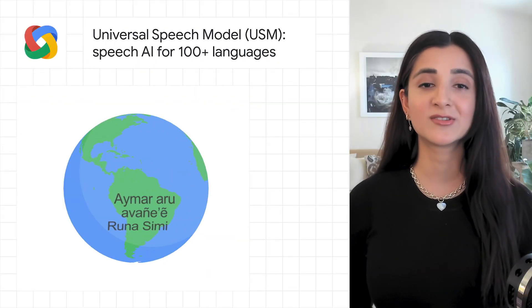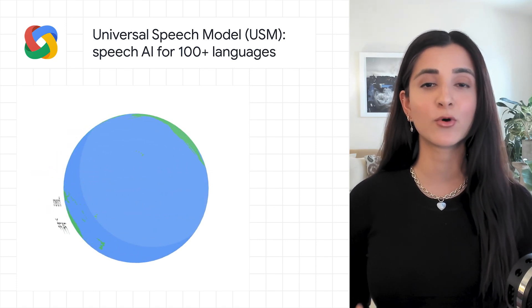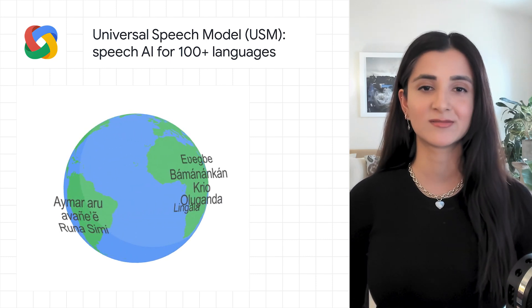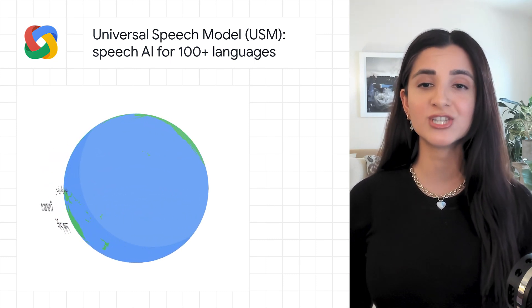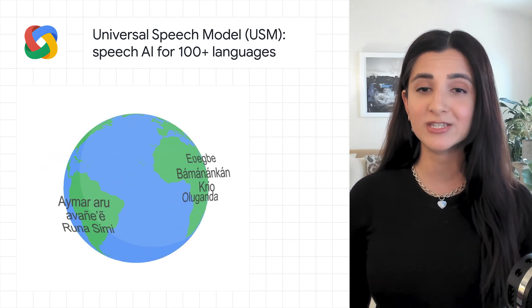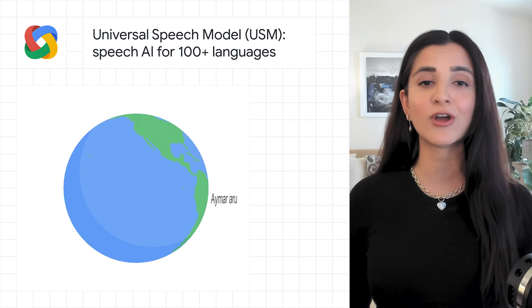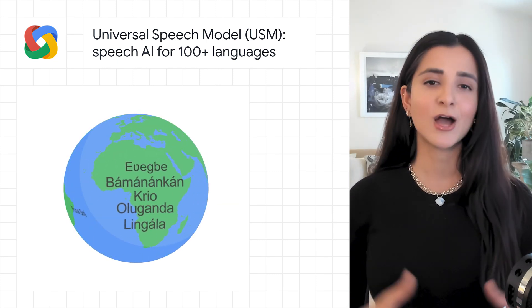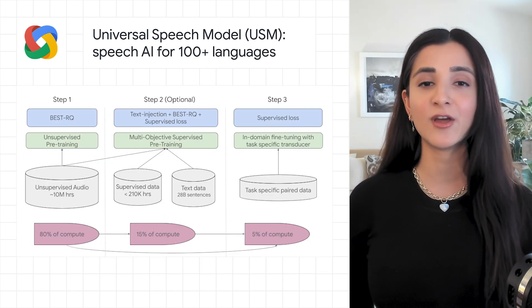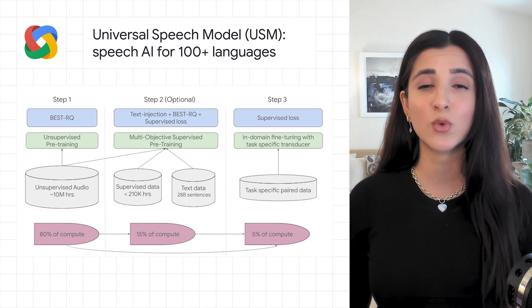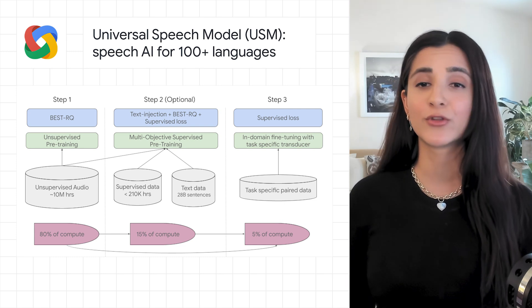Last November, we announced the 1,000 Languages Initiative, an ambitious commitment to build a machine learning model that will support the world's 1,000 most spoken languages. But some of these languages are spoken by fewer than 20 million people, so a core challenge is how to support languages for which there are relatively few speakers or limited available data. The Google research team is excited to share more about the Universal Speech Model, or USM, a critical first step towards supporting 1,000 languages. USM is a family of state-of-the-art speech models with 2 billion parameters trained on 12 million hours of speech and 28 billion sentences of text spanning over 300 languages.